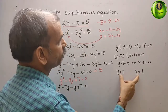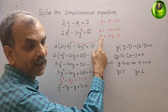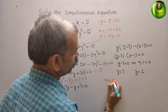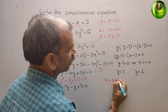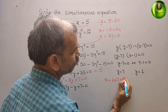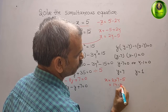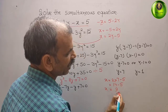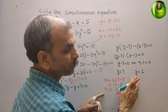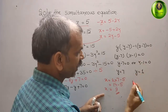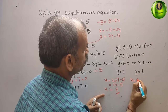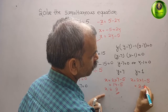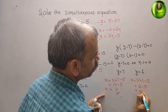Substituting y equals 7 into x equals 2y minus 5 gives x equals 2 times 7 minus 5, which is 14 minus 5, so x equals 9. Substituting y equals 1 gives x equals 2 times 1 minus 5, which is 2 minus 5, so x equals minus 3.